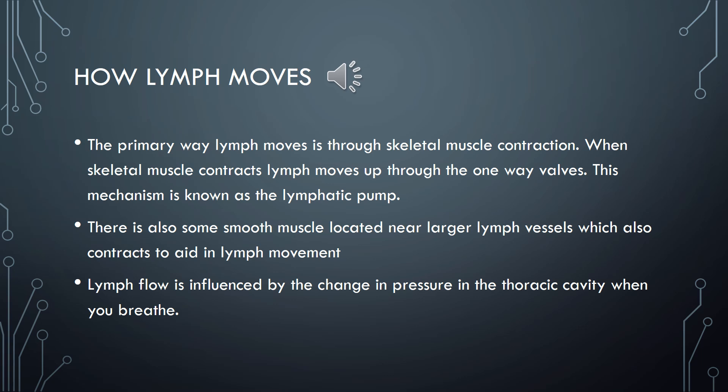Unlike the circulatory system, which has the heart to pump blood, the lymphatic system has no driving force to pump lymph through the body. So how does lymph from your foot make its way back up your leg towards your heart? The primary way lymph moves through the body is through skeletal muscle contraction. When skeletal muscle contracts, lymph vessels are squeezed and lymph is forced up through the one-way valves.